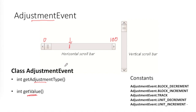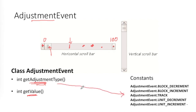When you click on the scroll bar, you can interact in different ways: clicking the arrow buttons, clicking the empty region, or dragging the thumb tracker. getAdjustmentType() tells you which type of adjustment was performed. It returns one of these constants: BLOCK_INCREMENT or BLOCK_DECREMENT (clicking on the empty region), UNIT_INCREMENT or UNIT_DECREMENT (clicking the arrow buttons), or TRACK (dragging the thumb tracker).